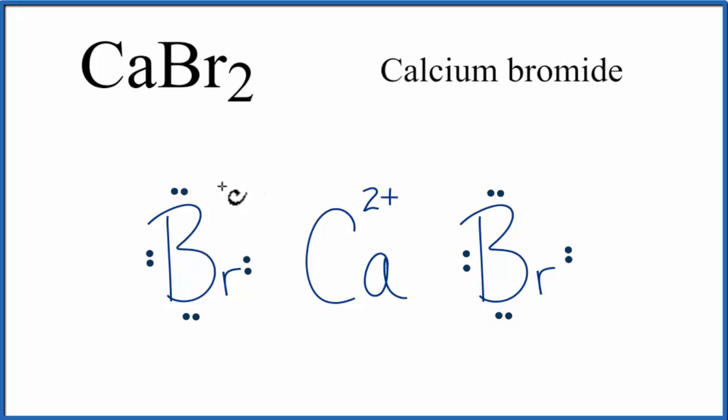The bromines they got the electrons, so they have a negative charge. These numbers add up to zero because this is a neutral compound.